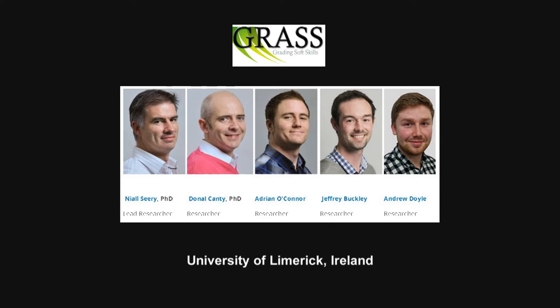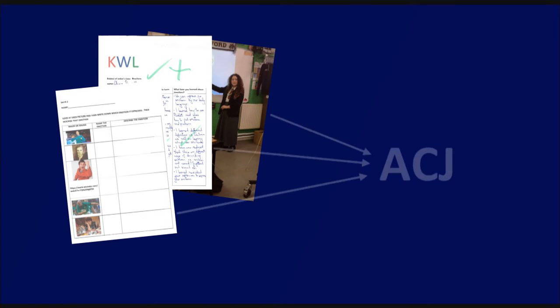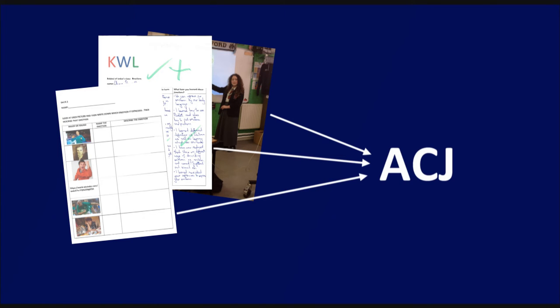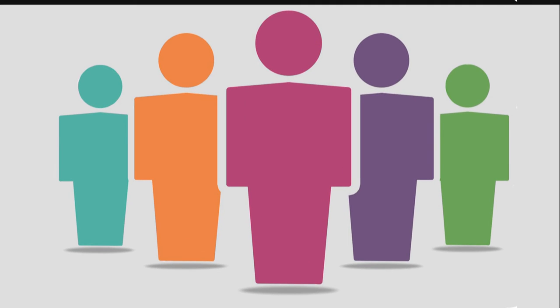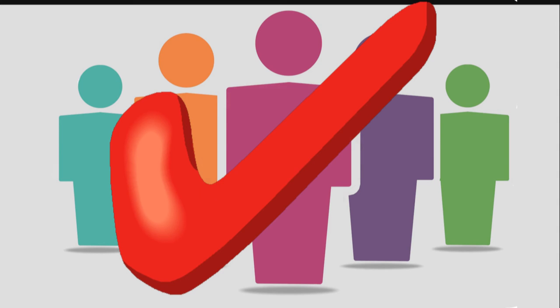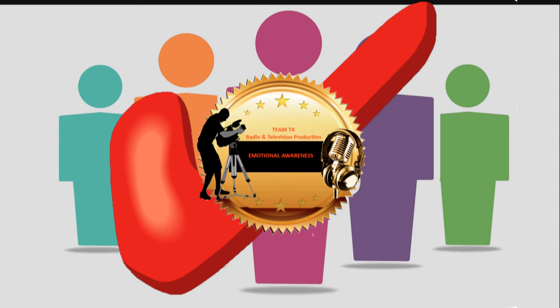In an attempt to add to the validity of our assessment, we joined with our GRASS partners at the University of Limerick in implementing ACJ, Adaptive Comparative Judgment, using the evidence of learning already gathered from the students. The purpose of the ACJ assessment activity is to exercise the judgment of a broader community of experts to validate the assessment data presented by the students as evidence of the soft skill.